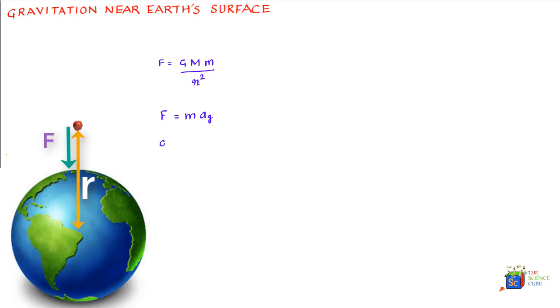We use Newton's second law of motion and say that F is equal to m into ag. If you combine these two equations, then GMm upon r square is equal to m into ag, which gives ag is equal to GM upon r square.